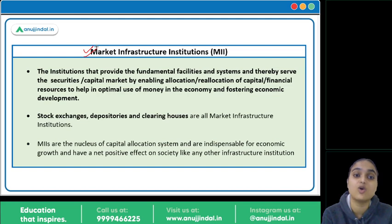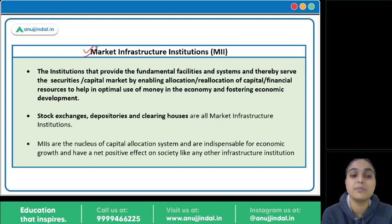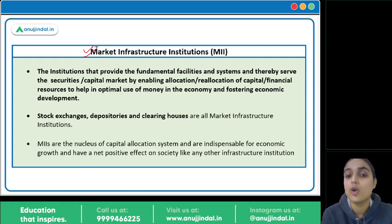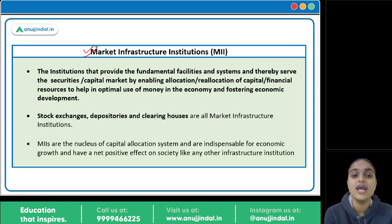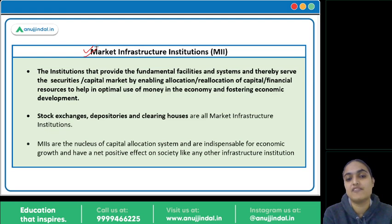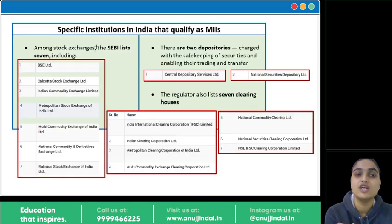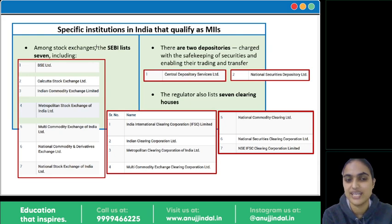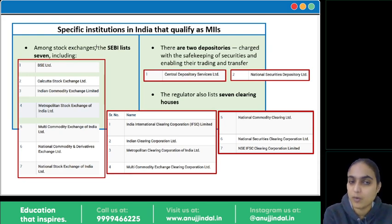Let me talk about which institutions are under MIIs. We have various stock exchanges, depositories, and clearing houses — these are the MIIs themselves. SEBI has listed seven stock exchanges as MIIs: BSE, Calcutta Stock Exchange, NSE, the Indian Commodity Exchange, Metropolitan Stock Exchange, Multi Commodity Exchange, and National Commodity Exchange.